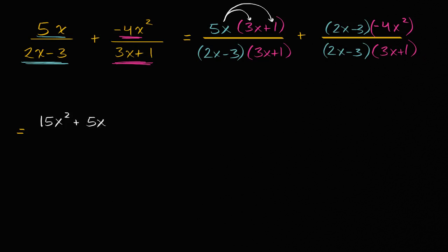And then over here, I could do negative 4x times 2x, which would be negative 8x squared. And then negative 4x times negative 3, which is plus 12x squared.